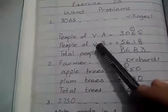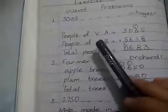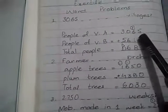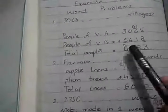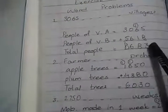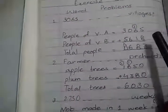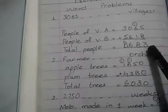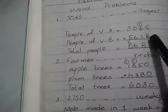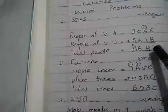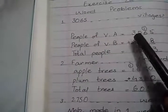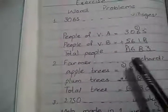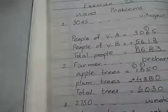Remember that we will write a statement in these questions. People of village A is equal to 3,065 and people of village B is equal to 5,618. We add from the unit place side: 5 and 8 is 13, write 3 carry 1; 6 and 1 is 7 and 1 is 8; 0 and 6 is 6; 3 and 5 is 8. Total people of village A and B is equal to 8,683.